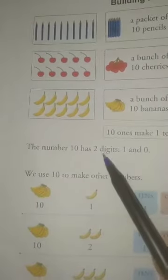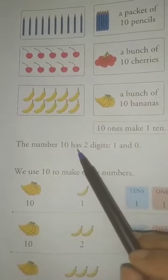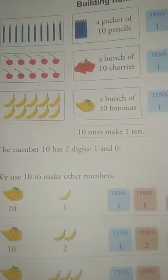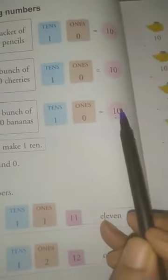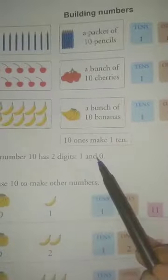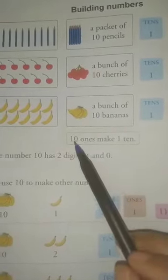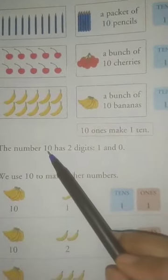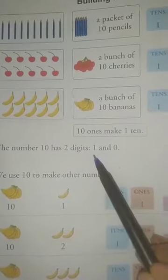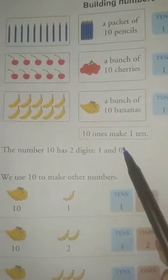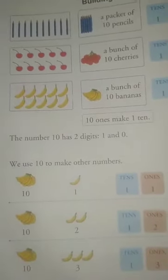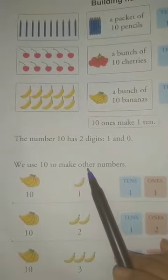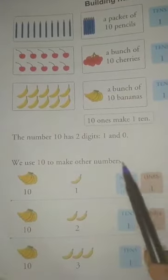The number 10 has 2 digits. The number 10 has how many digits? 2 digits — 1 and 0. This is number 10 and it has 2 digits: 1 and 0. We use 10 to make other numbers.